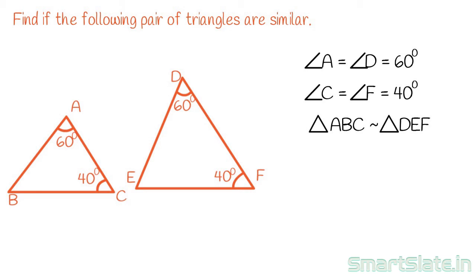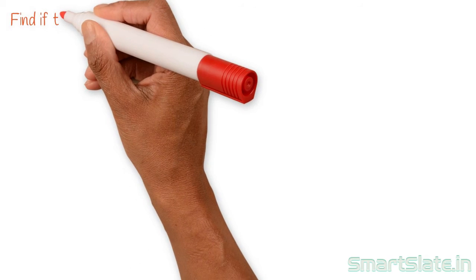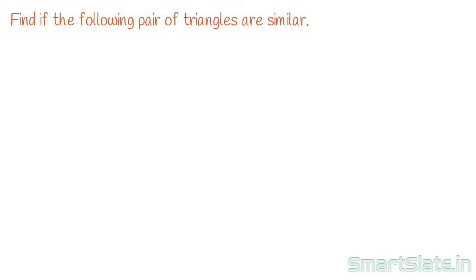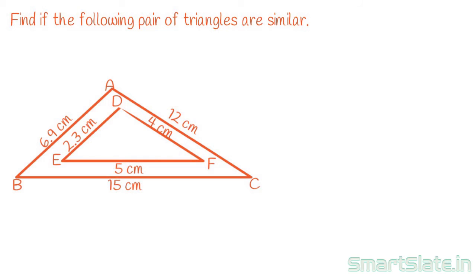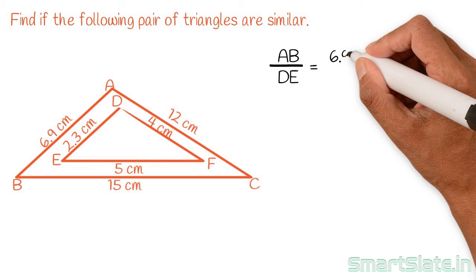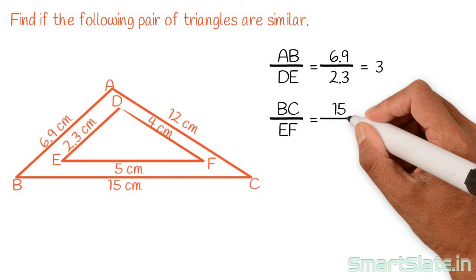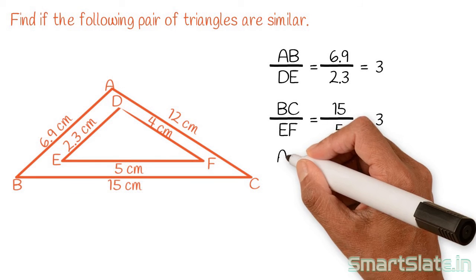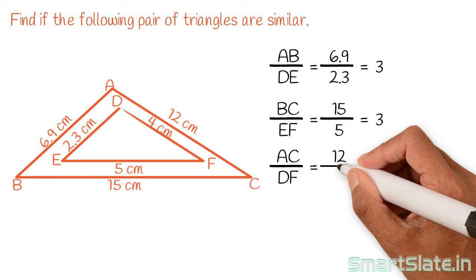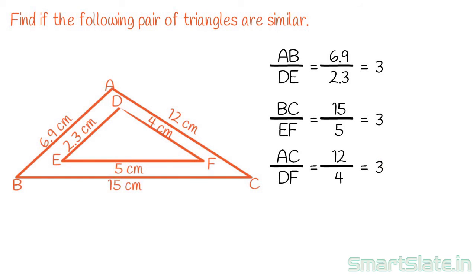Let's take another pair of triangles and check if they are similar. We have the measures of the sides. In order to prove if they are similar, we have to find the proportion of corresponding sides. Calculating AC by DF gives 12 by 4, which equals 3. All the corresponding sides are in proportion. According to the SSS criteria — in two triangles, if their corresponding sides are in proportion, then they are equi-angular — these two triangles are similar.